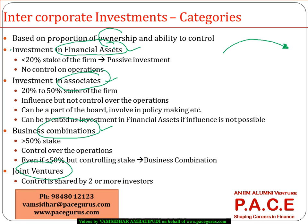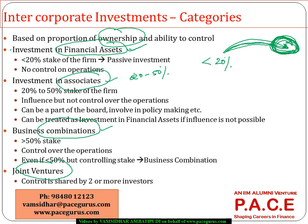The naming is primarily based on the percentage of ownership. If you have bought less than 20% stake, we call it investment in financial assets. If your investment is somewhere between 20% to 50% of the total value of the firm, we call it investment in associates. If your investment is more than 50%, we treat it as a business combination. And if two or more companies come together for joint influential control, we call it a joint venture.